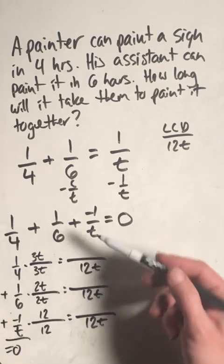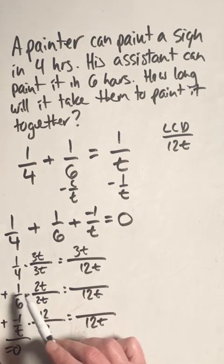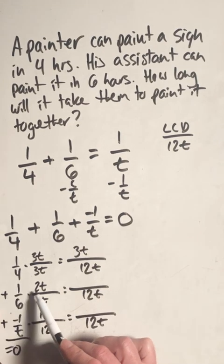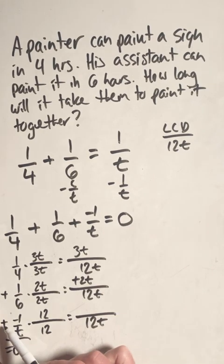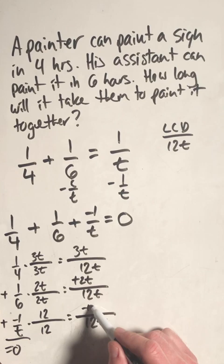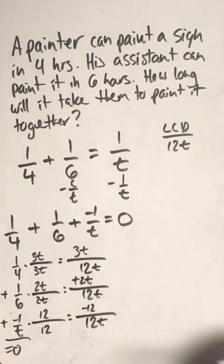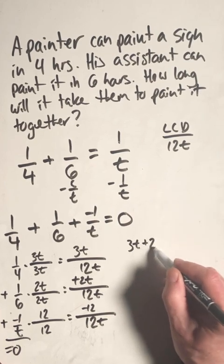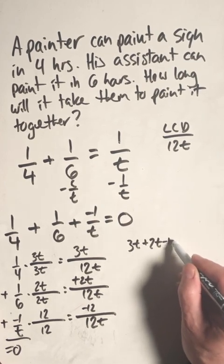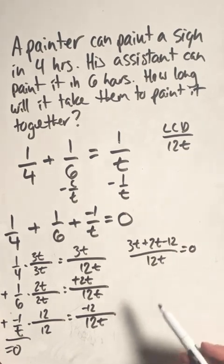Then we will simplify all the numerators. One times 3t is 3t, plus one times 2t is plus 2t, plus negative one times 12 would be negative 12. Now we can rewrite all these numerators over our common denominator of 12t. So we have 3t plus 2t minus 12, all over 12t, again still equals zero.